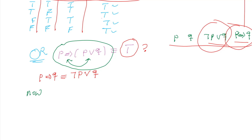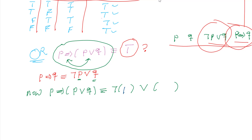Using the above equivalence, P implies P or Q is equivalent to the negation of the first statement, or the second statement. The first statement is P, and the second statement is P or Q. So this becomes: the negation of P, or P or Q.